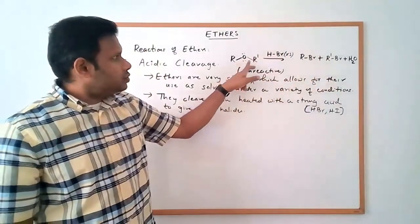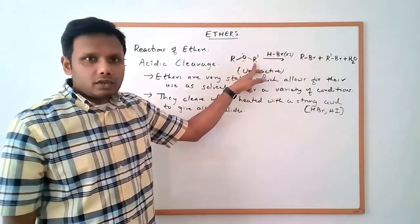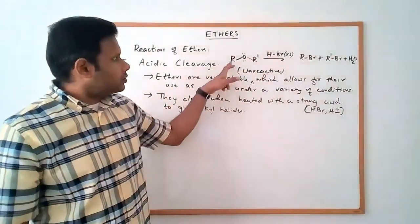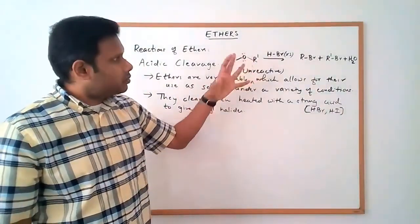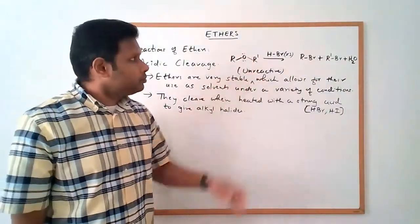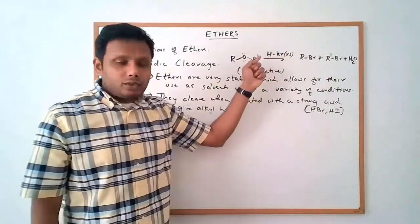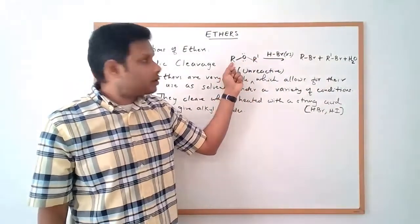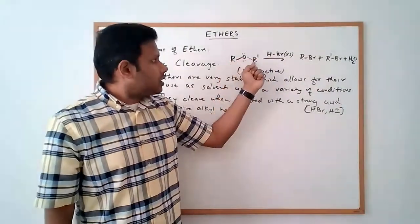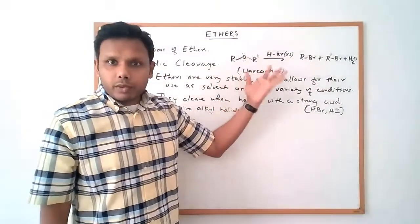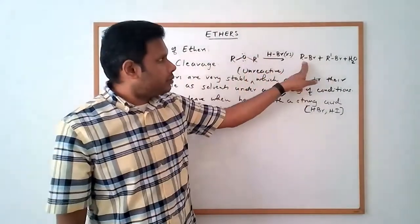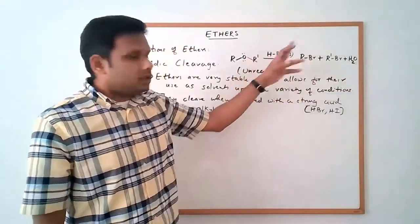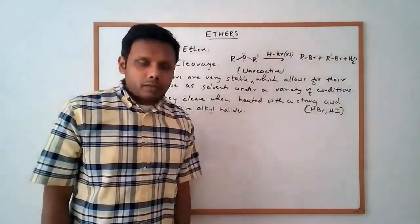I've used two different R groups here to separate out the two alkyl parts. We have one R part and the other is an R prime — they could be the same. When you do this cleavage, you get an alkyl halide corresponding to the R group and an alkyl halide corresponding to the R prime part of the molecule, so you get RBr and R'Br plus water. This oxygen comes out as water.